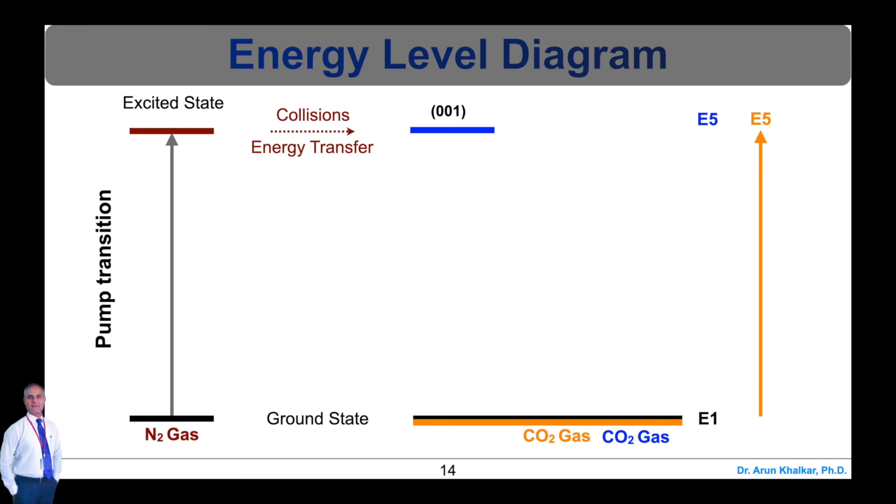Some CO2 molecules are also excited to the upper level E5 through collisions with electrons. The E5 level is the upper lasing level, while the (0,2,0) and (1,0,0) states marked as E3 and E4 levels act as the lower lasing levels. As the population of CO2 molecules builds up at the E5 level, population inversion is achieved between the E5 level and the levels at E4 and E3.